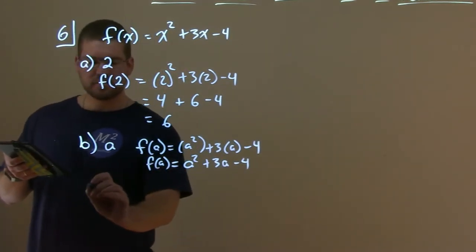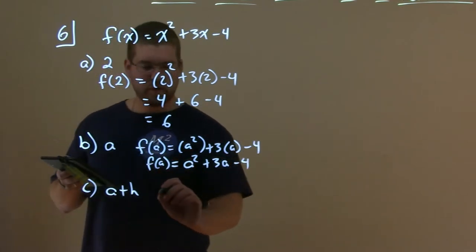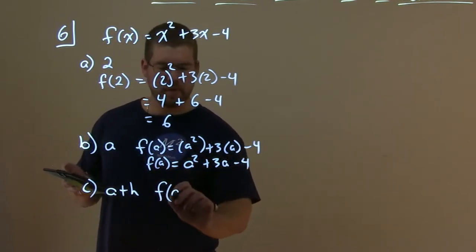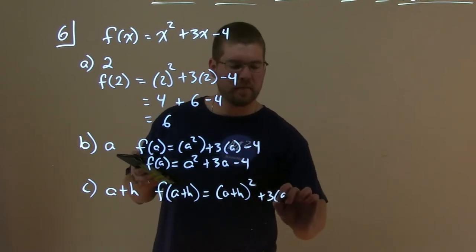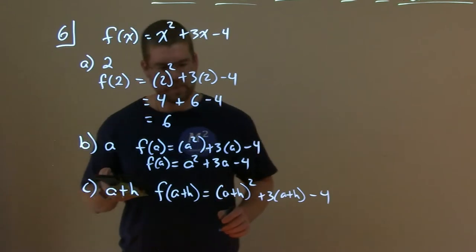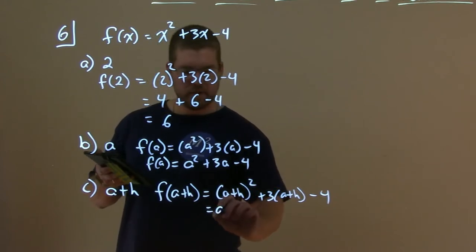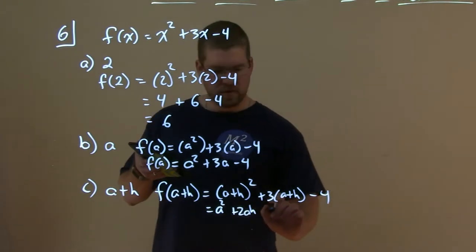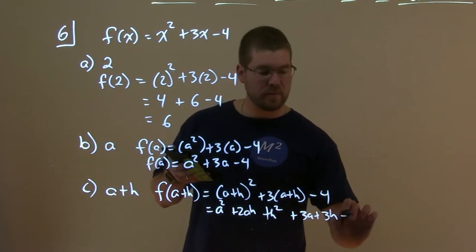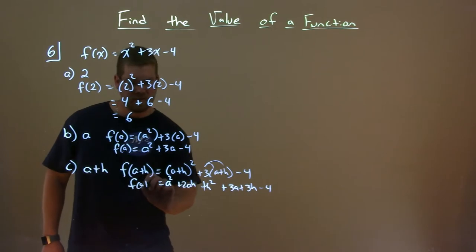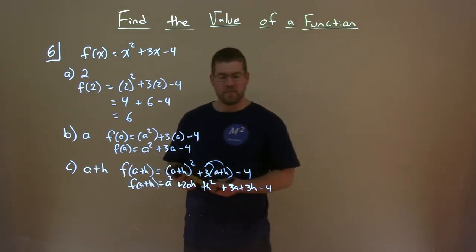Part c is a little tricky. c is at a plus h. We take our function f(x) and for every x, we're putting a plus h in. f(a+h) equals (a+h) squared plus 3 times (a+h) minus 4. We multiply that out: a squared plus 2ah plus h squared, then distribute the 3, giving us 3a plus 3h minus 4. There are no more like terms, so we're done.